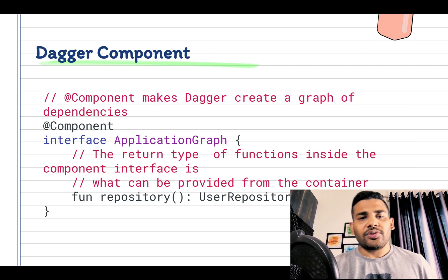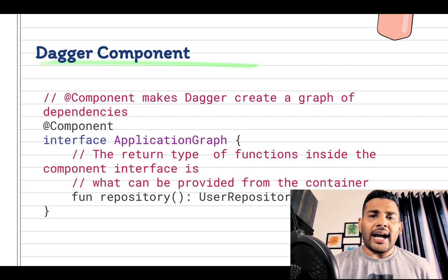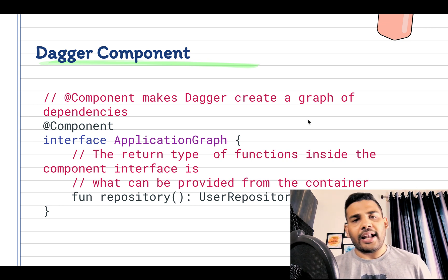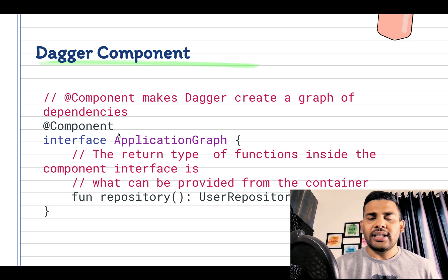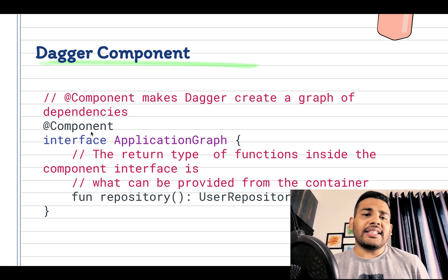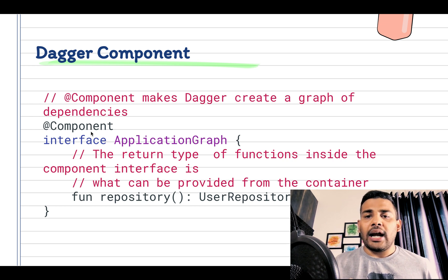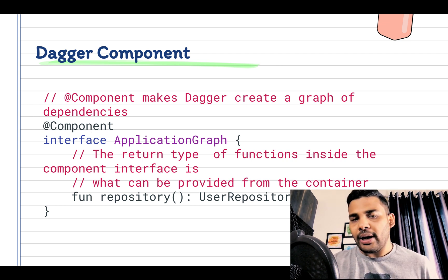Now after this we have Dagger Component that makes a graph for dependencies. To create a component we just create an interface and annotate it with @Component. Inside the interface we define the functions with the return type and rest of the thing Dagger will do automatically.